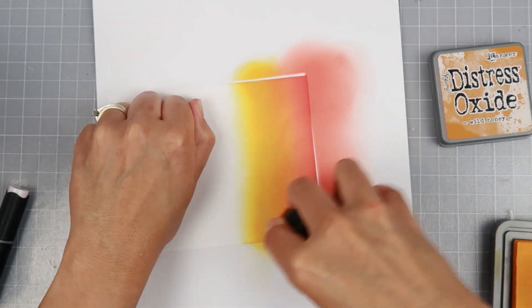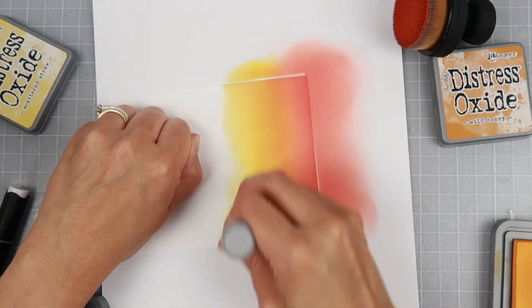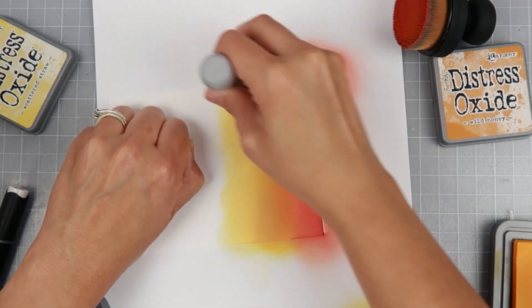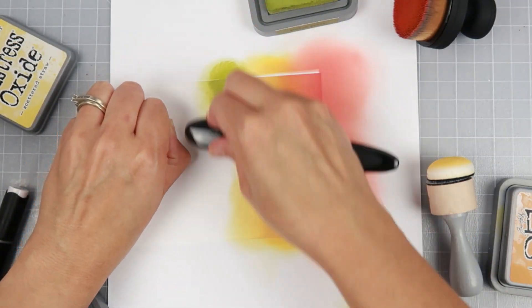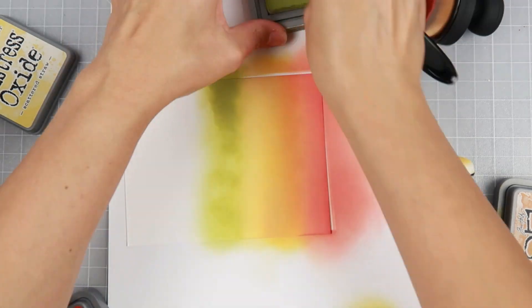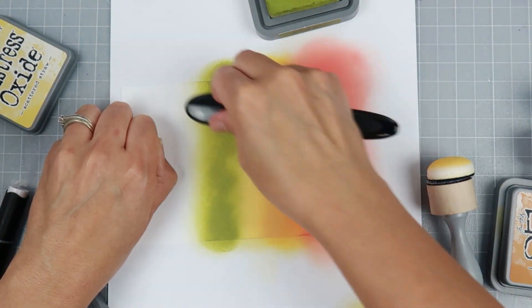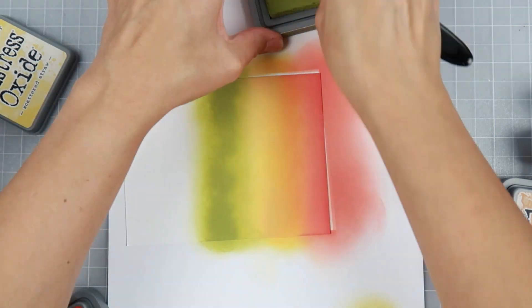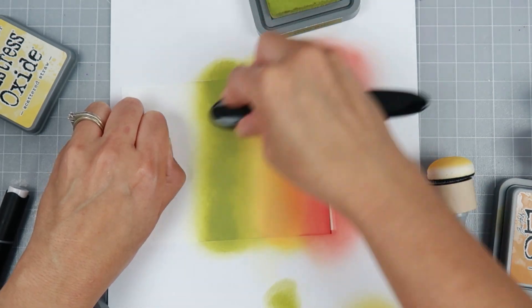You can always go back and use the red over again if you put too much yellow or something. So now I'm doing green and I'm still using distress oxide ink, coloring it really nicely again with that same brush.